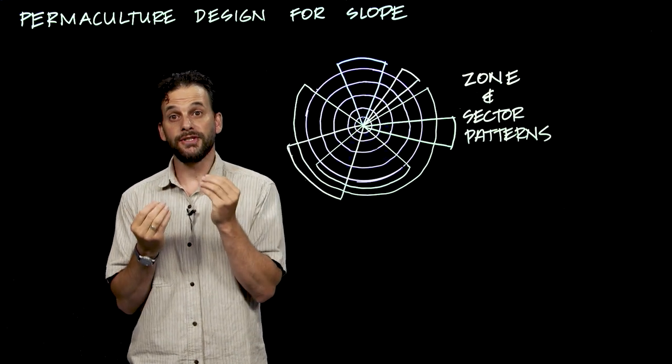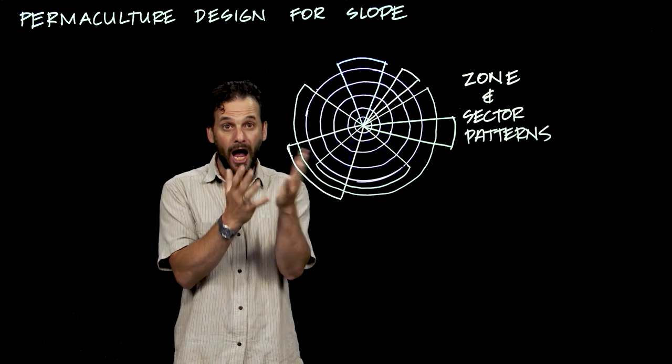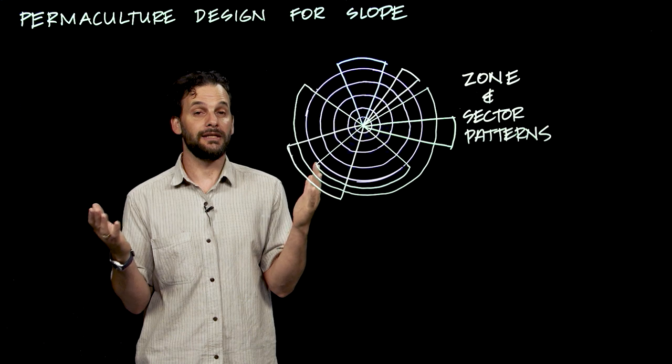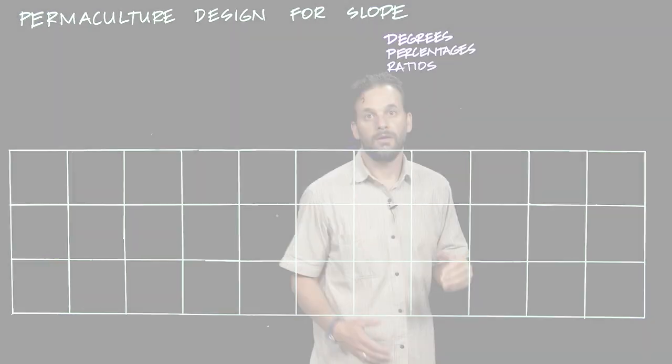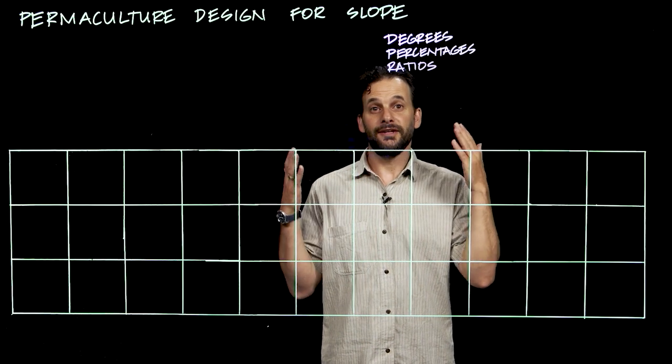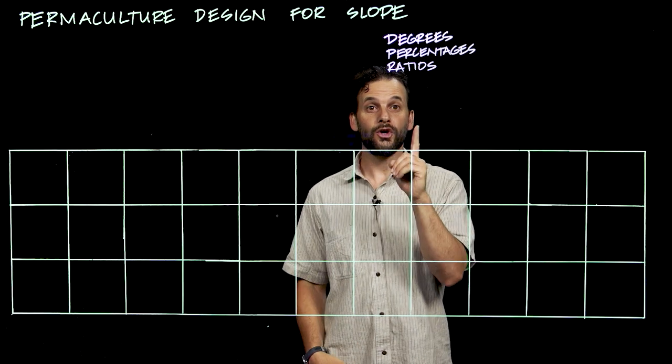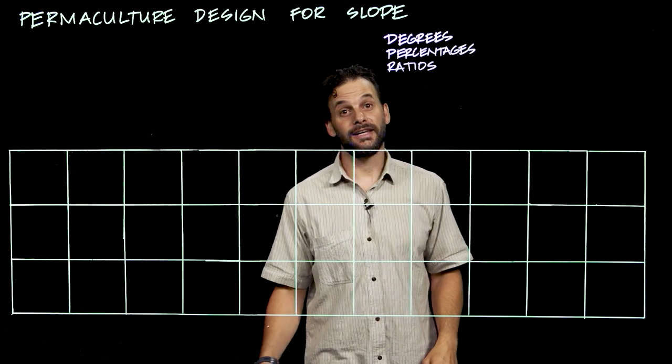So the permaculture design process continues on beyond zones and sectors, and the next design layer that we're going to look at is slope. On a compass that is 360 degrees all the way around, one quarter of that is 90 degrees.